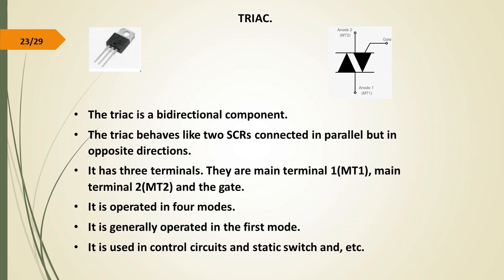TRIAC. The TRIAC is a bidirectional component that behaves like two SCRs connected in parallel but in opposite directions. It has three terminals: main terminal 1 (MT1), main terminal 2 (MT2), and the gate. It is operated in four modes, though it is generally operated in the first mode. It is used in control circuits and static switches.